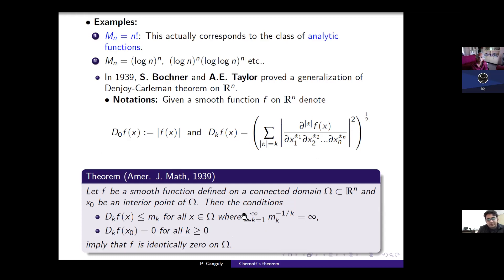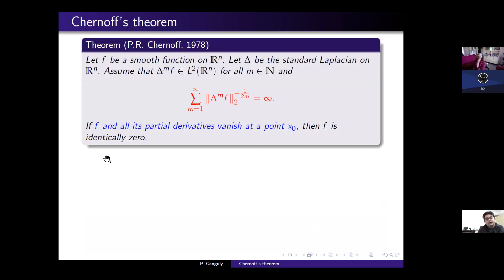Later, Sarnoff revisited quasi-analytic functions. Instead of considering all partial derivatives, he considers only the Laplacian and proved a sufficient condition for a smooth function to be quasi-analytic. His theorem states: if f is smooth, Δ is the standard Laplacian on R^n, all powers of the Laplacian applied to f are in L^2, and the series sum of ||Δ^k f||_2^{-1/k} is divergent (the Carleman condition), then if f and all its partial derivatives vanish at a single point x_0, then f is identically zero. This tells us how a partial differential operator like the Laplacian generates a class of quasi-analytic functions.